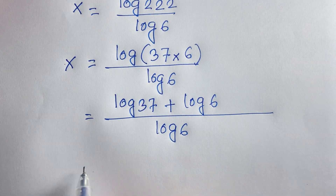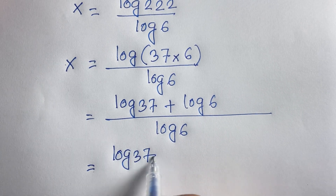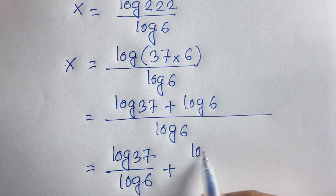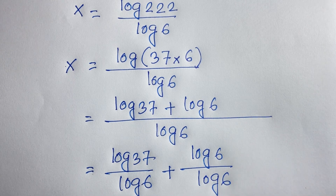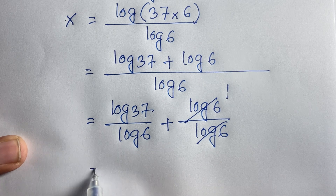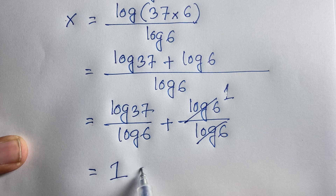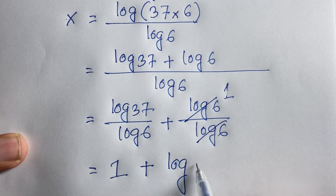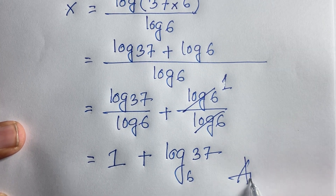Now, log(6) divided by log(6) equals 1, and we are left with 1 plus log(37)/log(6). This is our final answer.